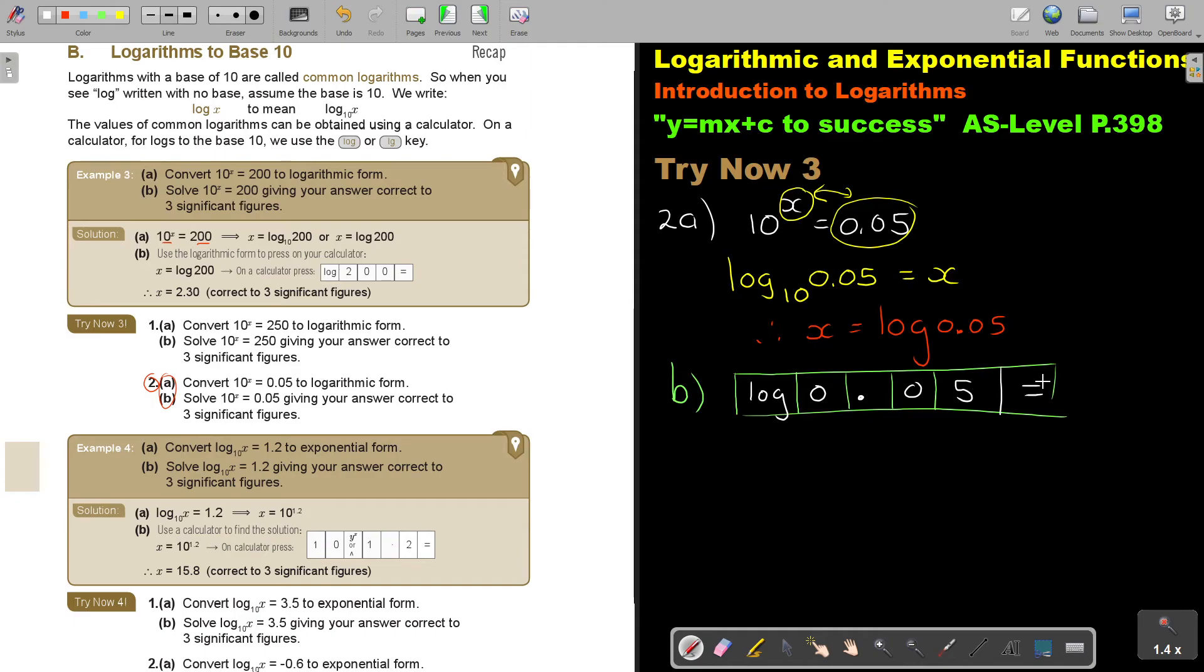And I'm getting on my calculator. Therefore, x equals, and to three significant figures, negative 1.30. Put a 0 there. And that's how you do it. Very easy.